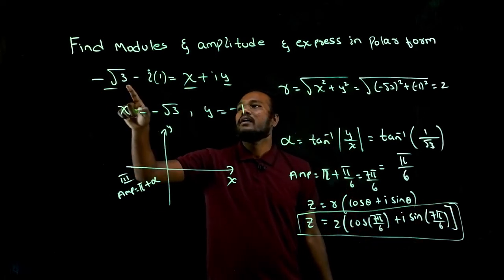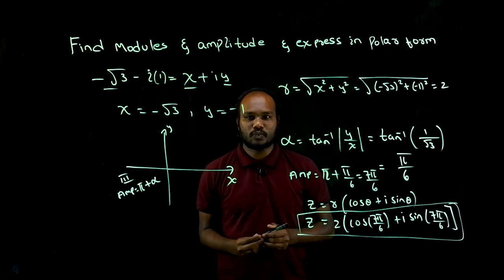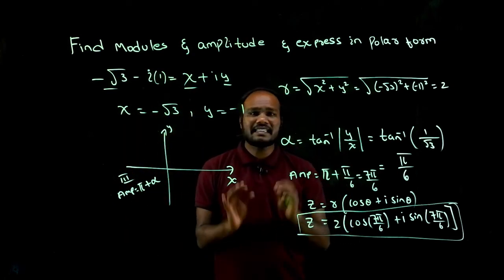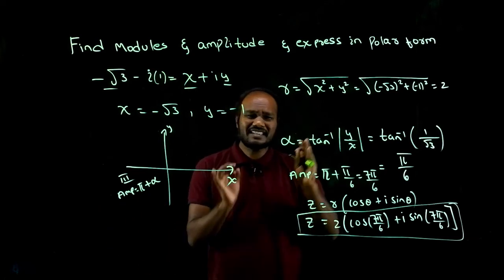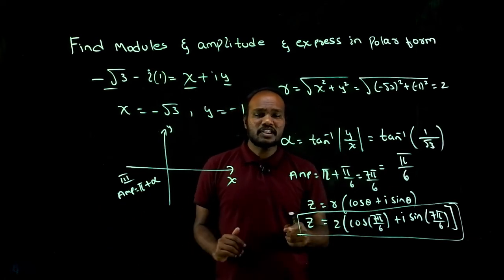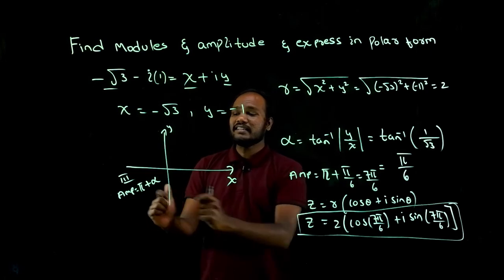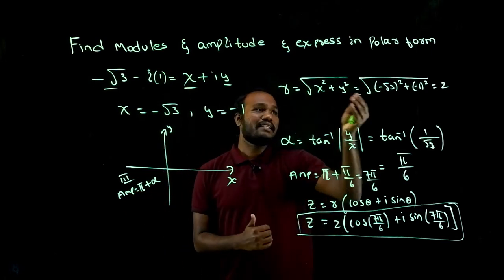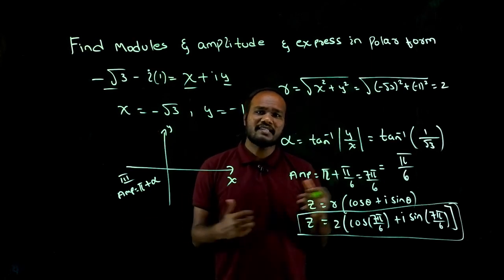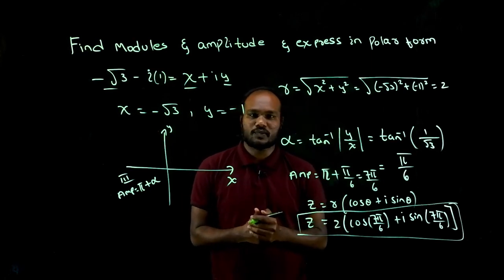That is z equal to minus root 3 minus i. This is exactly the solution to your textbook question. We are not explaining what it is, that's the solution. If you want a complete explanation, the link is in the description. Go to our course and check out how this is the third quadrant and why I'm taking this amplitude as a formula.